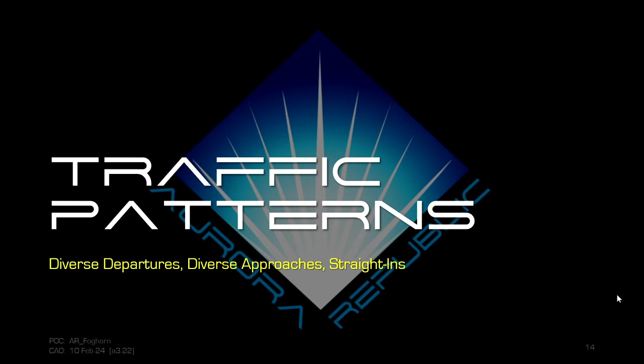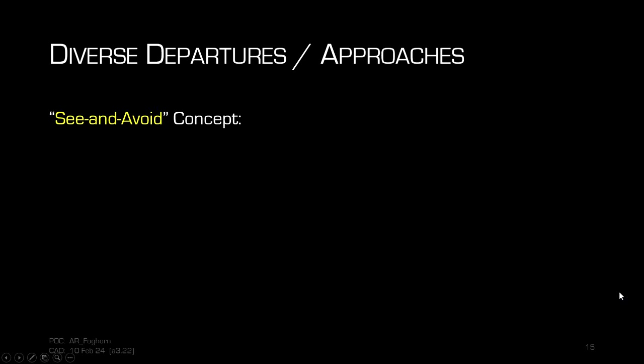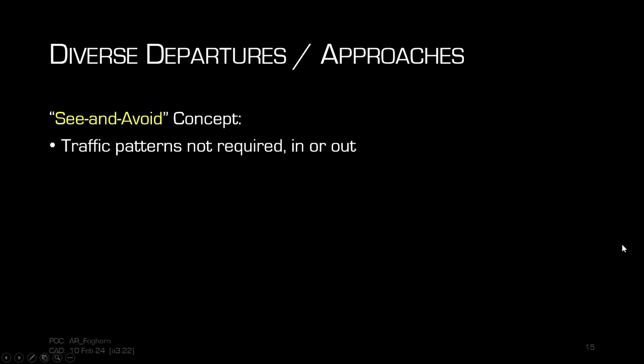To wrap up, we'll touch on typical traffic patterns. Not that folks really use them much in Star Citizen, but basically the type of approaches and departures used in Star Citizen is what's called diverse approaches or diverse departures, which is based on the see-and-avoid concept. You just take off, look around outside, don't hit any other aircraft, and fly off where you want to go in the most expedient fashion. It's completely on the pilot to see and avoid other aircraft, traffic, obstacles, and any restricted areas.